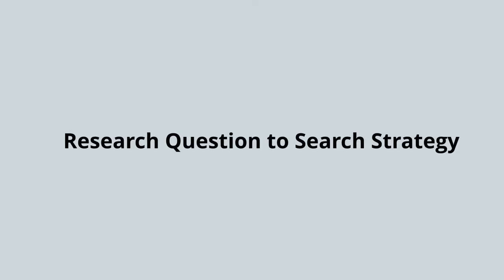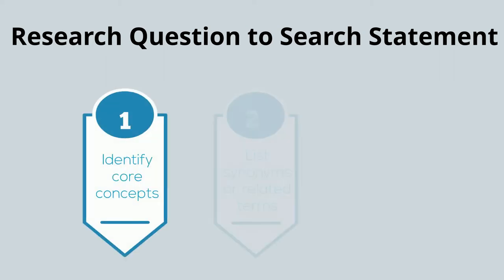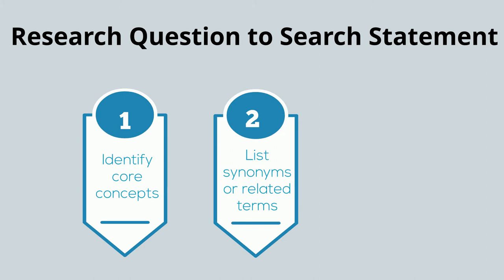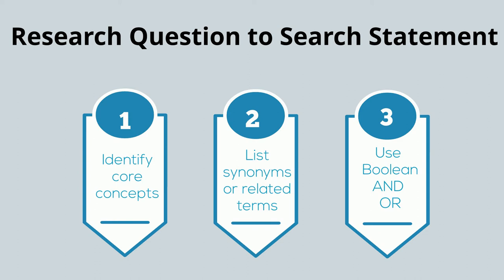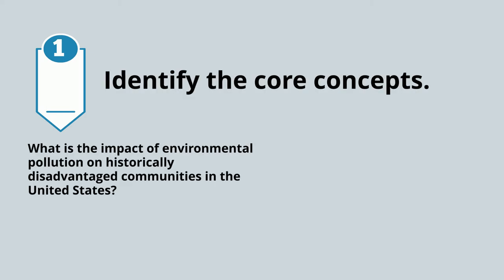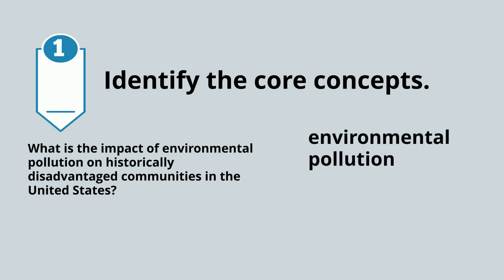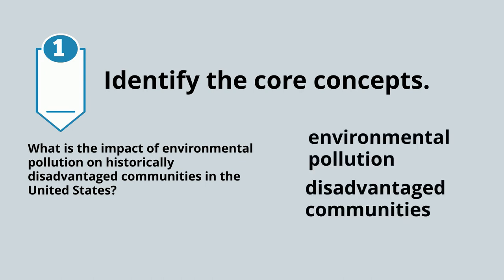We have a research question. Now we need to turn it into a viable search strategy that we can use in various databases. To turn our research question into a search statement, we follow three critical steps. First, identify core concepts. Second, list synonyms or related terms. Third, use Boolean logic — AND and OR. In our question, the core concepts are environmental pollution, disadvantaged communities, and United States.